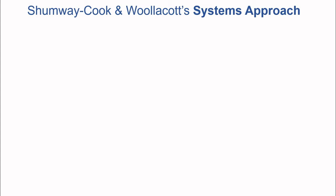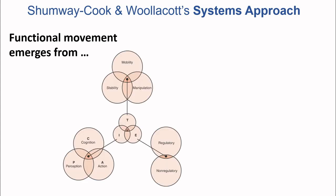Let's start this lecture by going back to where we started, with the Systems Approach Model of Shumway-Cook and Woollacott. From this model, functional movements are seen to emerge from a context of constraints. Here we have the task, individual, and environment model. Functional movements emerge from the confluence of constraints created when a particular person is performing a particular task in a particular environment.